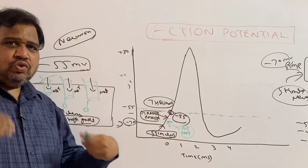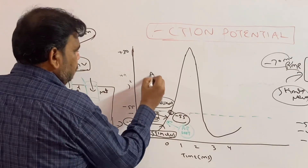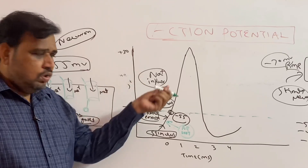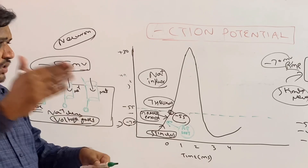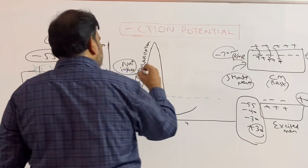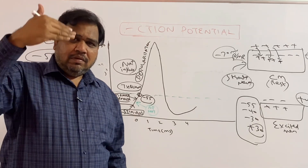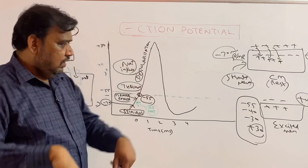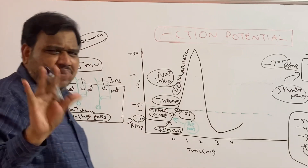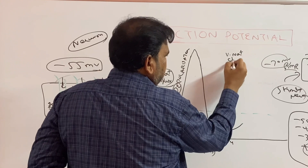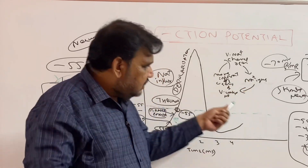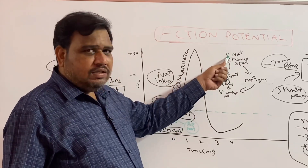At minus 55 millivolts, more sodium channels open — voltage-gated sodium channels open — and we have sodium influx. Voltage-gated sodium channels are open, so as sodium channels are open, sodium is coming in. From minus 55 this starts to change: up to minus 40, minus 30, it keeps going, even up to plus 30. This phase is called depolarization. This sodium influx causes still more gated channels to open, still more sodium influx, still more gated channels open — this is called positive feedback.